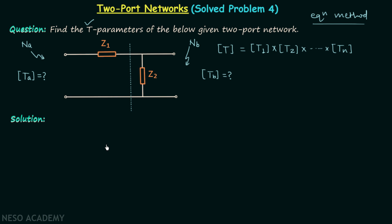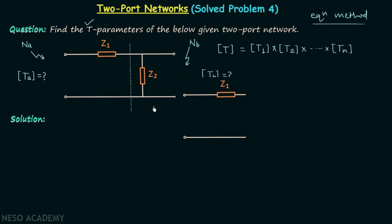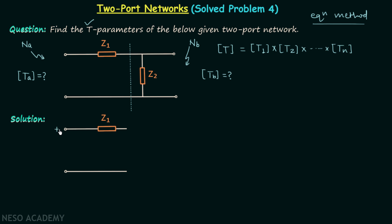So if we can find the T parameters matrix of network NA and the T parameters matrix of network NB, then after multiplying them we will have the T parameters matrix of the overall network, which is our main task. First we will calculate the T parameters matrix of network NA. Let's say the input voltage is V1, the output voltage is V2, the input current is I1, and the output current is I2. We will apply KVL in this loop.